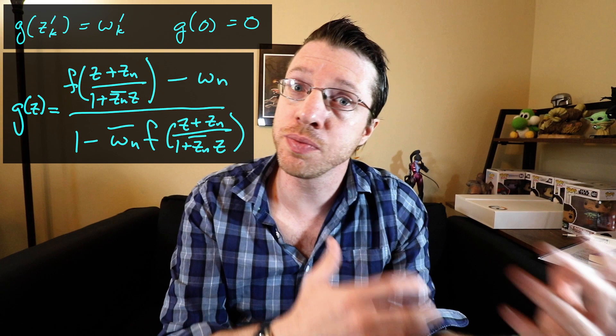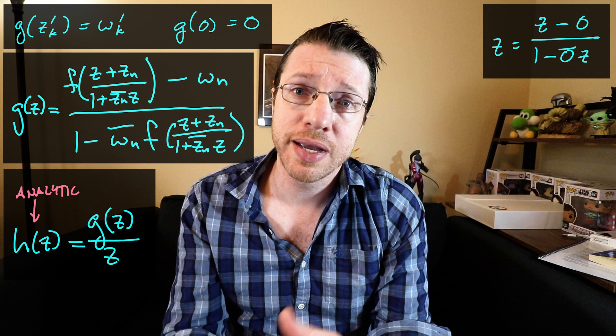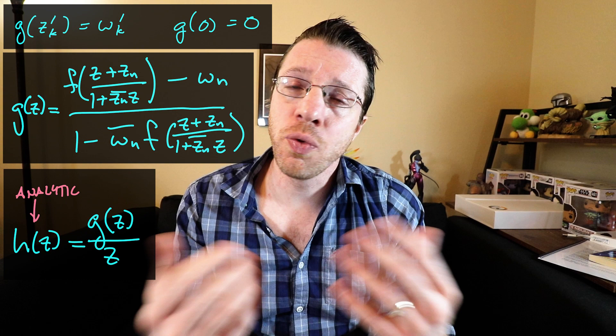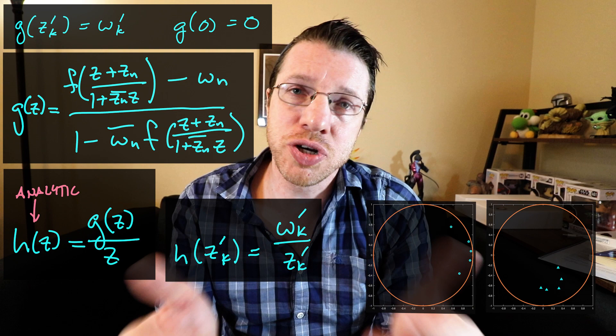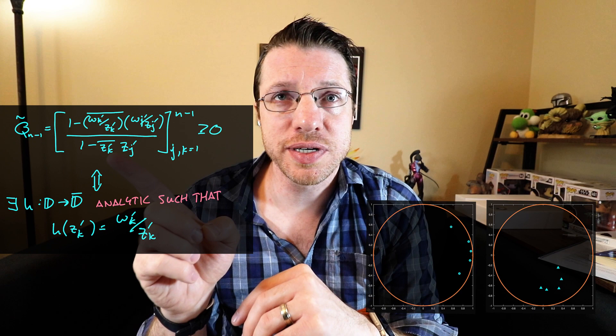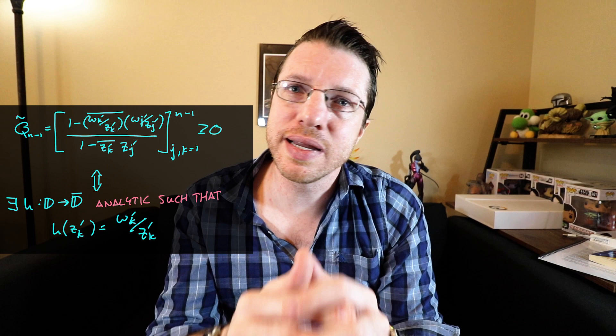We now move to our next reduction. Our interpolating function sends 0 to 0, so it is divisible by z, leaving an analytic function. Since z itself is the simplest Blaschke factor, removing it still gives a Blaschke product. Our inputs stay z1' through z_n', and the w's change to w_i divided by z_i. This is an interpolation problem with one fewer point, which falls within our induction assumption — these points are interpolatable if and only if the corresponding matrix is positive semi-definite. We complete the proof by showing that this matrix is positive semi-definite if and only if our Q_n prime is positive semi-definite.